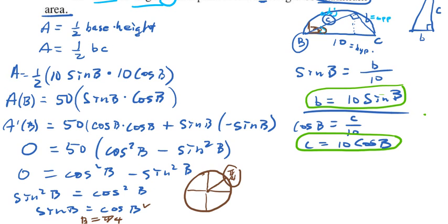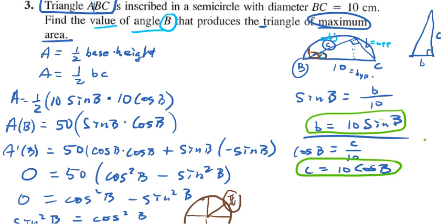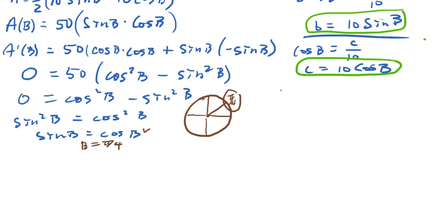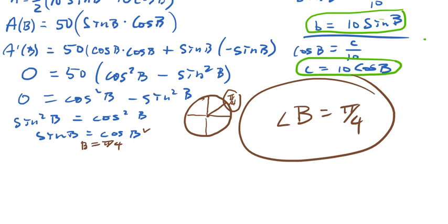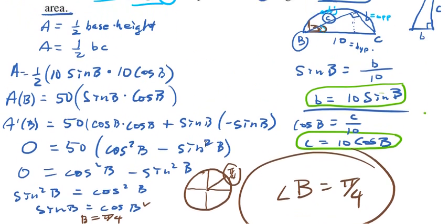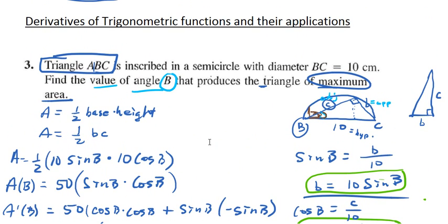And that is the answer to the question, because this is the critical number, and it would make sense that there is some maximum there. There wouldn't be a minimum because a minimum area would be like zero. If we get an angle of pi over 4, we can assume that is the angle that gives the maximum. So angle B is pi over 4, that's your answer. That's the answer to question number 3 in your assignment.